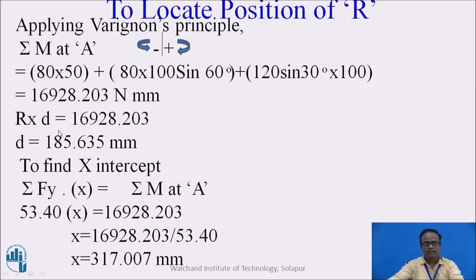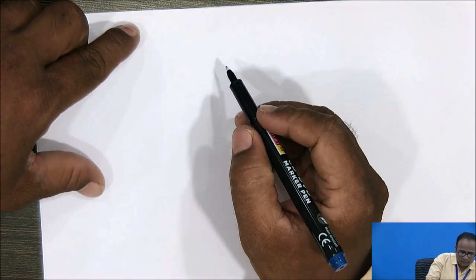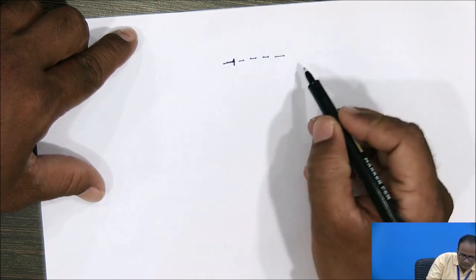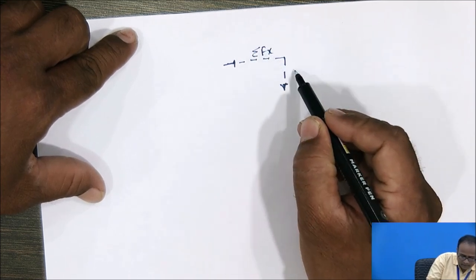By putting this value in the expression R × D equals summation of moment at A, which is 16928.203 N·mm, we can find the perpendicular distance D from point A. After finding the resultant force, we can show the sketch for the resultant force by drawing the rectangular components ΣFx and ΣFy.